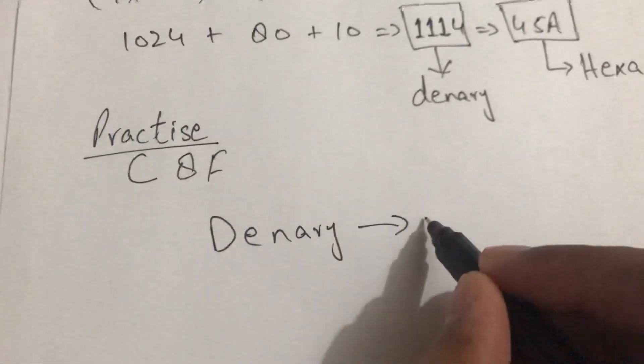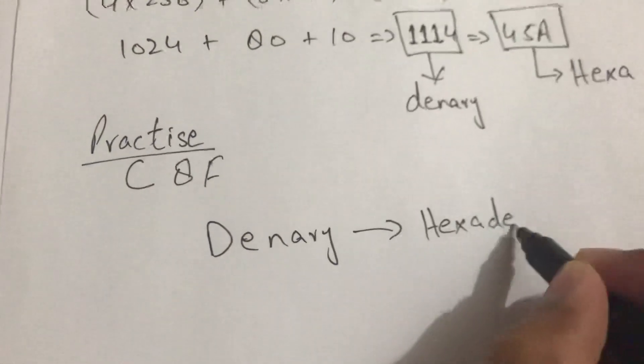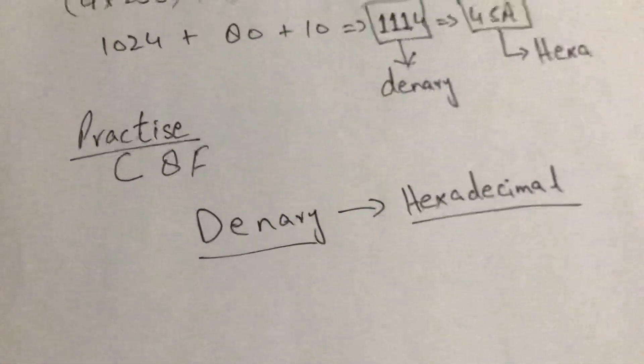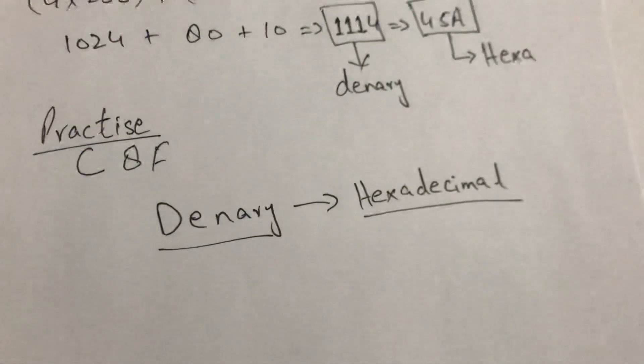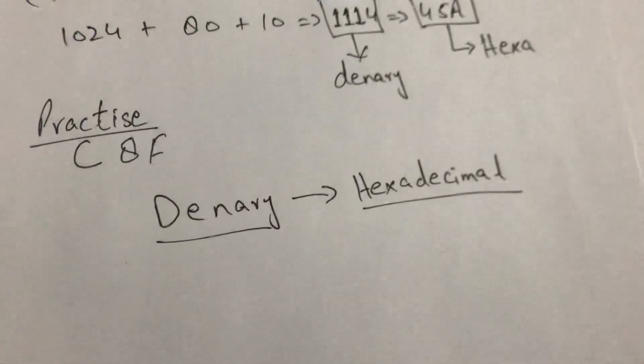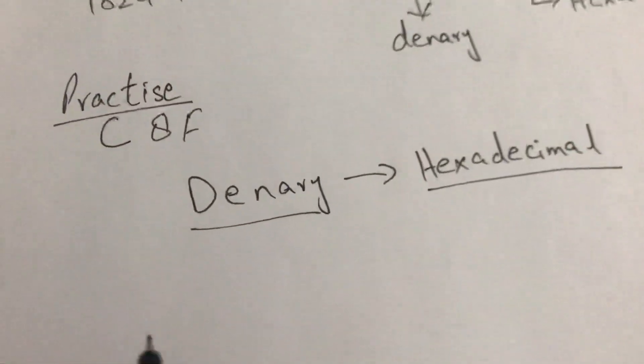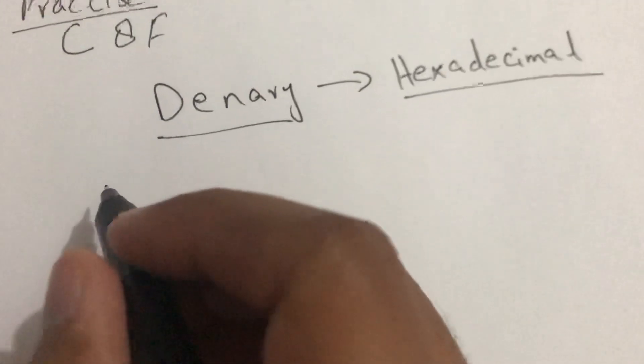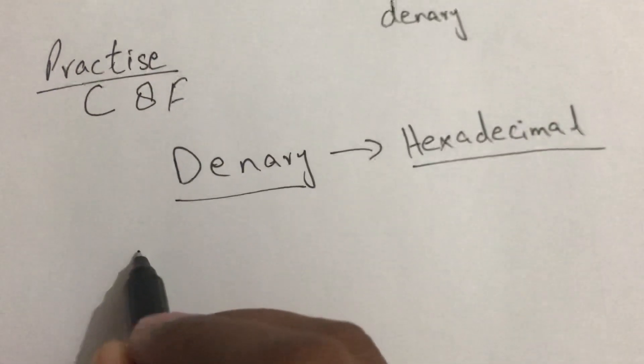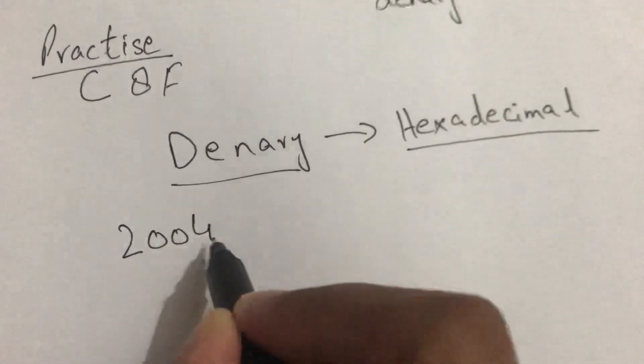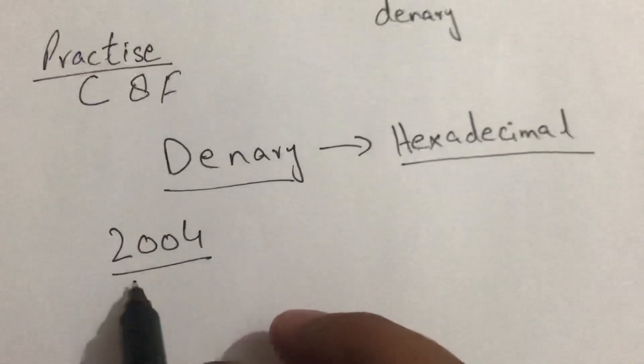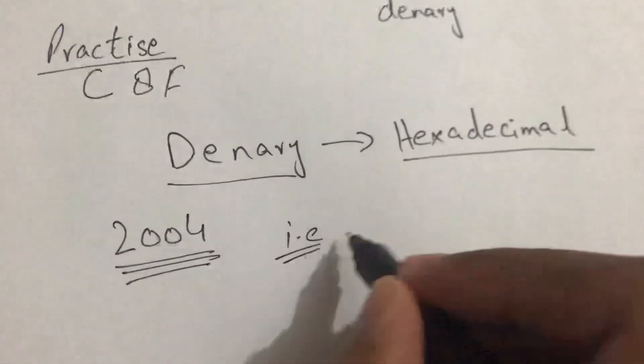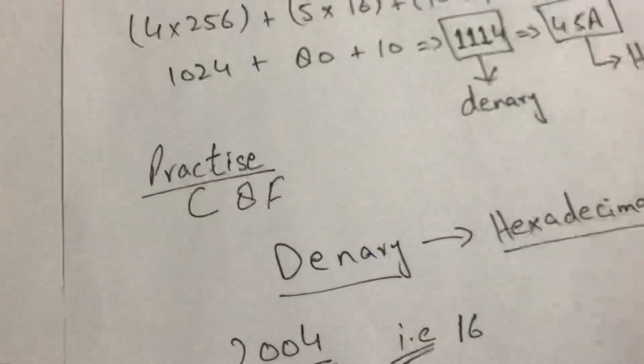Now denary to hexadecimal numbers. For example, we take a value that is also mentioned in the book, that is 2004. Simply we have to divide this value with hexadecimal base value that is 16.